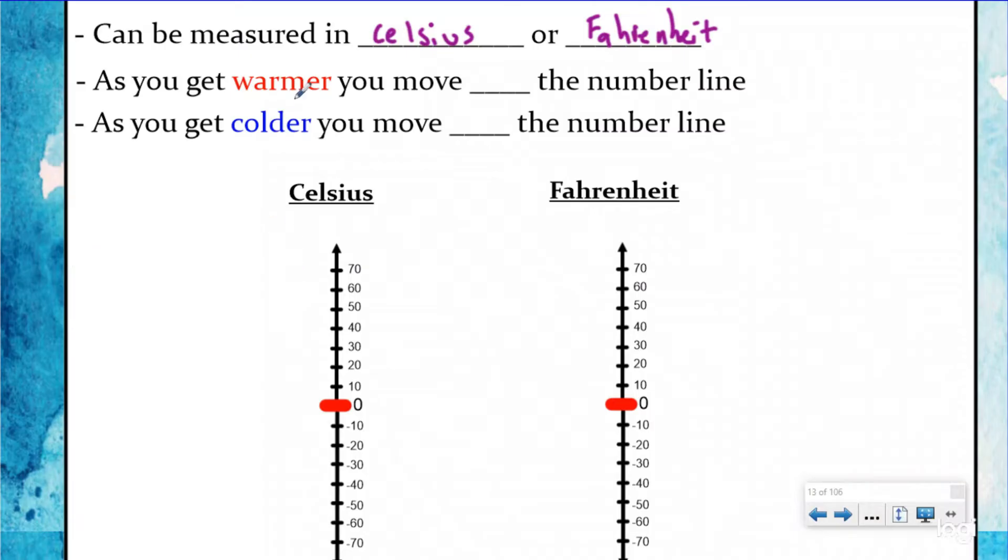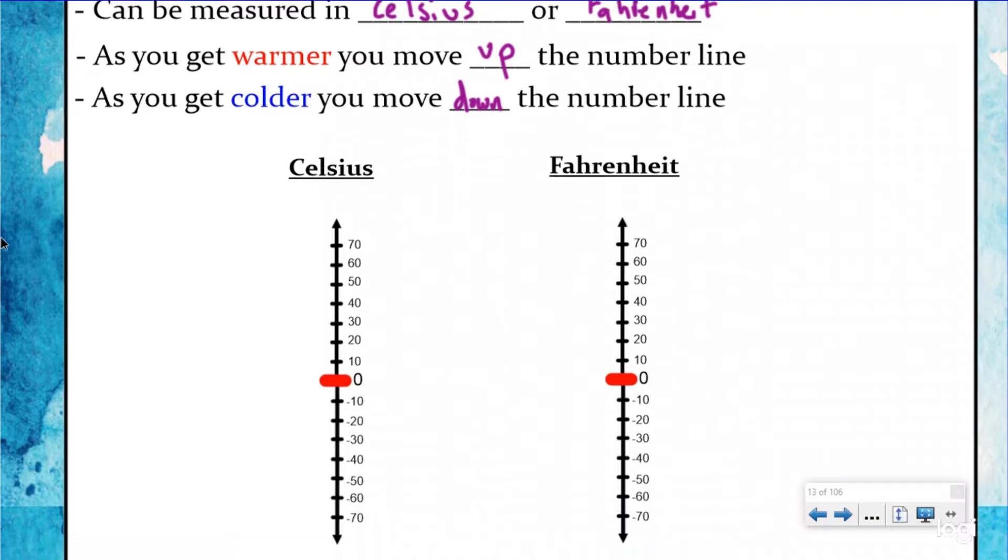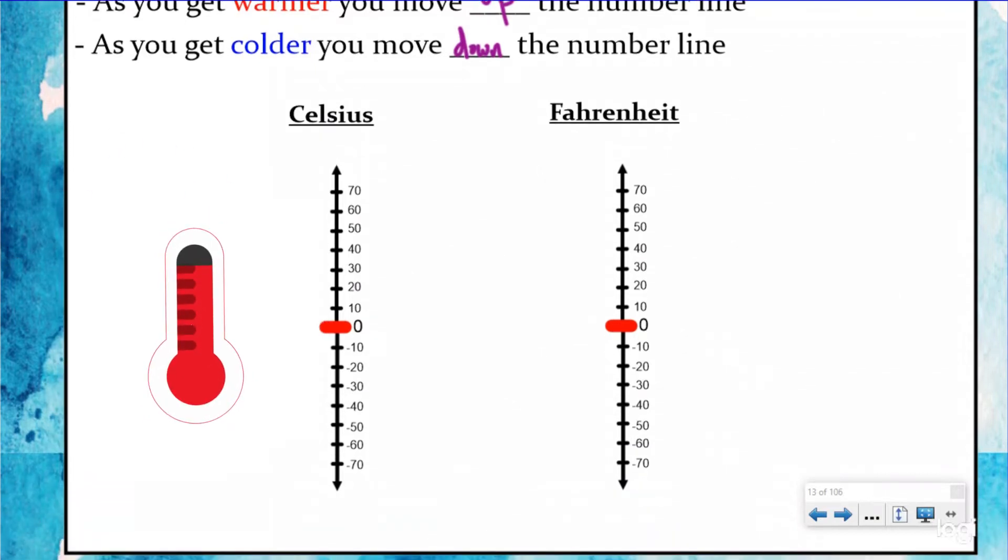Now, here's the key things about how the number lines work for temperature. As you get warmer, you move up the number line, and as you move colder, you move down the number line. And I like to use a vertical number line for these because it looks like the thermometer. And you also have the medical thermometer that might be digital that you can see right here. But typically when you look at thermometers, you're going to see the ones that go up and down. It has the red line of mercury moving up and down. They probably don't make it out of mercury anymore, but that's okay.